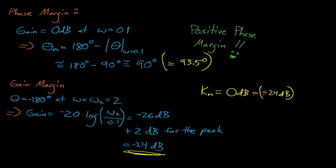After doing this, we see that the gain at this frequency is equal to negative 24 decibels, which means that our gain margin is equal to 24 decibels, or about a factor of 16. In this case, because both our gain margin and phase margin are positive, this suggests that the system is stable.